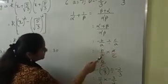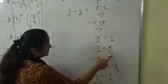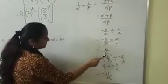Work this. So it's minus b by a, division becomes into, take the reciprocal, a by c. a gets cancelled, so we have minus b by c.